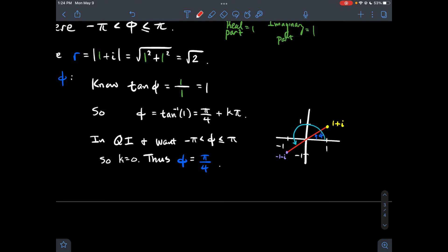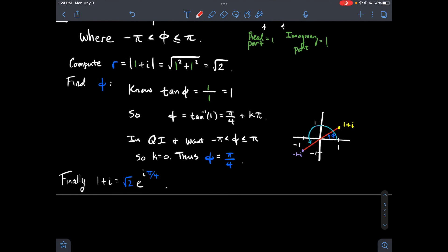And so that tells me that phi should just be pi over 4. And so in conclusion, 1 plus i in rectangular form has polar form square root of 2 times e to the i pi over 4.